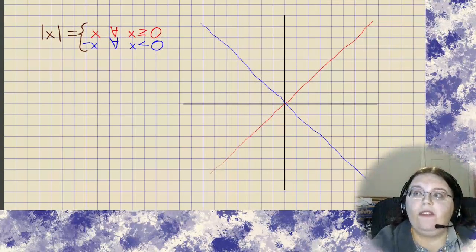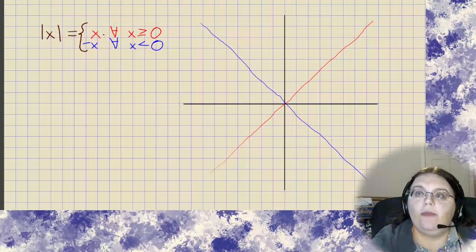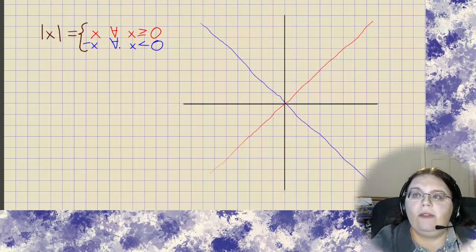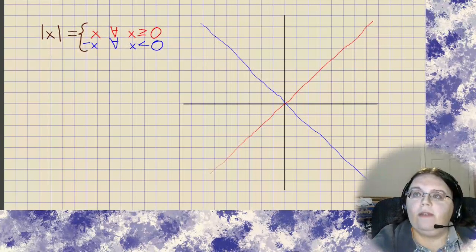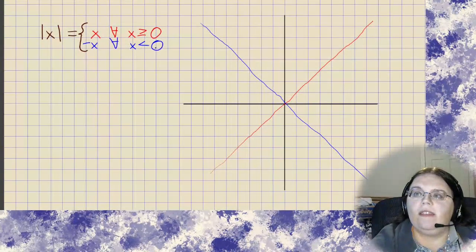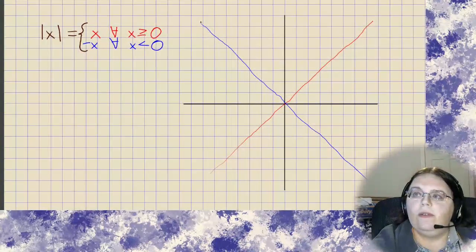What we have to do is only consider each of these formulas for the right values of x. So starting with all values of x that are less than 0, I see we need to follow the blue line like so.